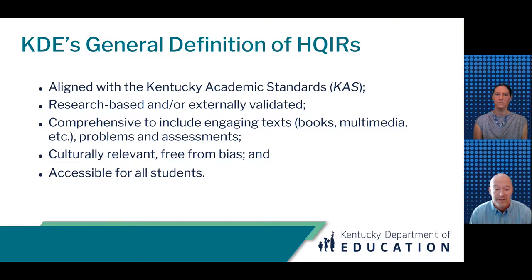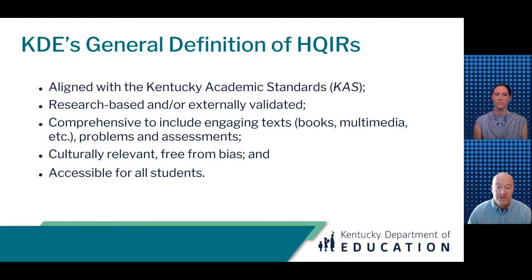Since we have reached a focus on the essential role of HQIRs, let's reset KDE's general definition of HQIRs. To clarify some important terms: by comprehensive, we mean resources address the full depth of standards for each grade level and include pedagogical and instructional supports to meet the diverse needs of students. Culturally relevant and free from bias means acknowledging students' ethnic, racial, and linguistic identities within the context of their grade-level work in ways that do not create barriers to student learning. Materials that are accessible for all students looks to ensure equitable opportunity regardless of unique experiences and qualities, so students can engage meaningfully and fully demonstrate their understandings and skills.